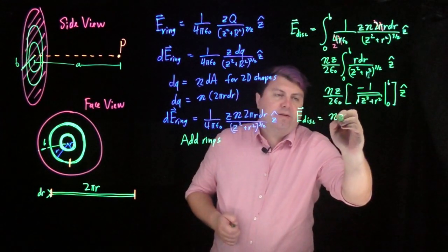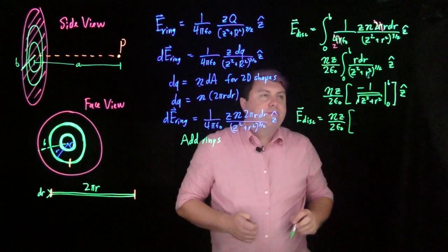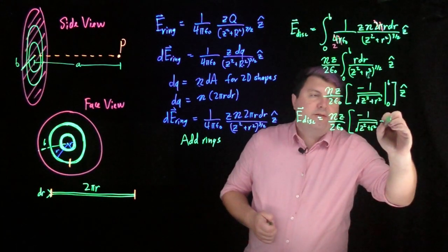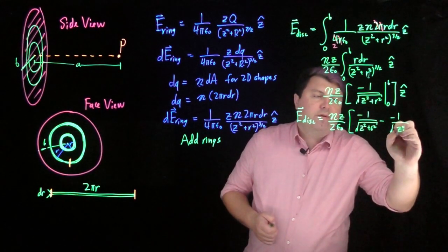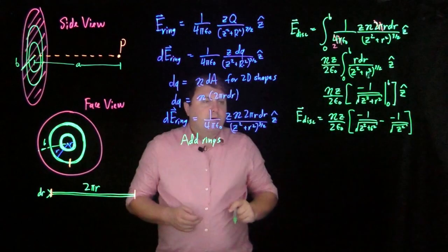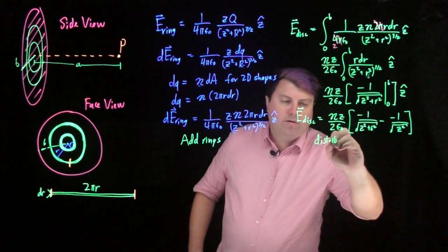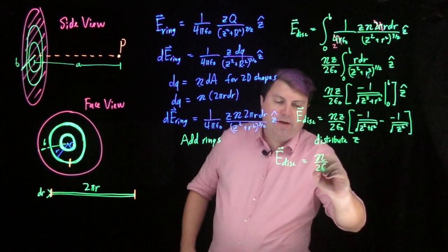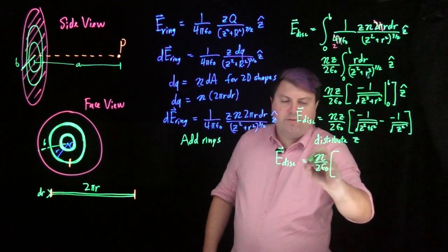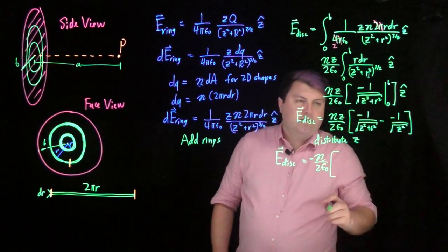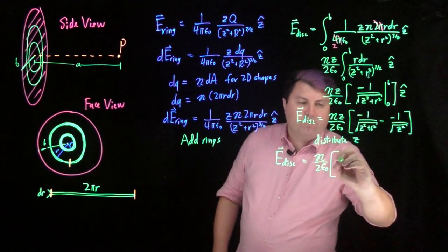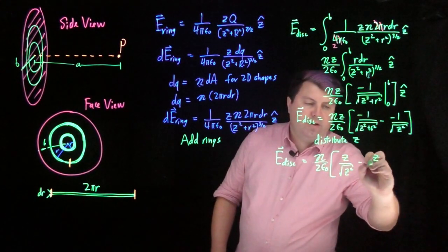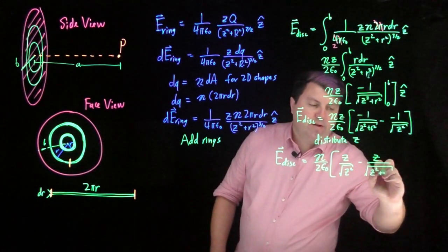So the electric field of our disk is eta z over 2 epsilon naught, and then negative 1 over square root z squared plus b squared minus negative 1 over square root of z squared. So one thing that we can do is we can distribute the z, and then we get the electric field of our disk is eta over 2 epsilon naught. We can also distribute this negative sign, or no, we don't want to do that. Sorry, negative negative gives us 1. We can bring this over, so we have z over the square root of z squared minus z over the square root of z squared plus b squared.